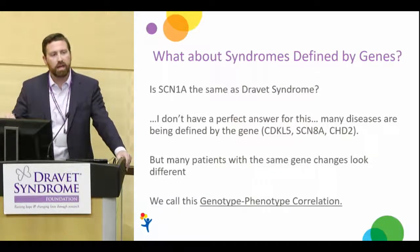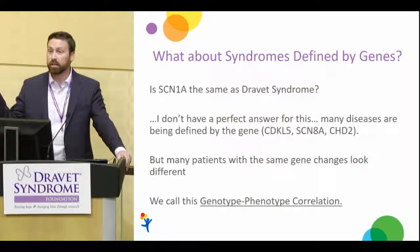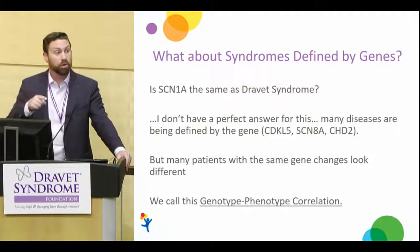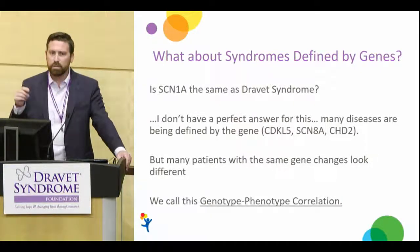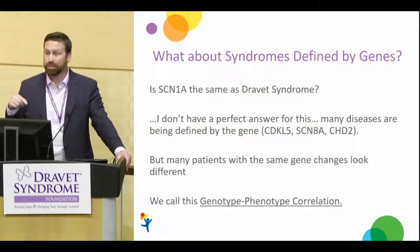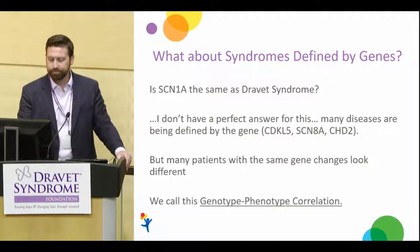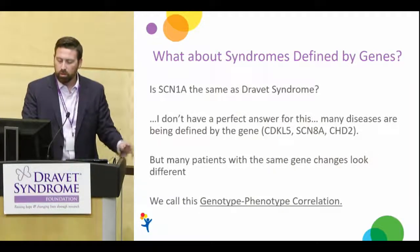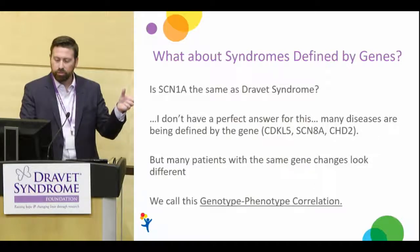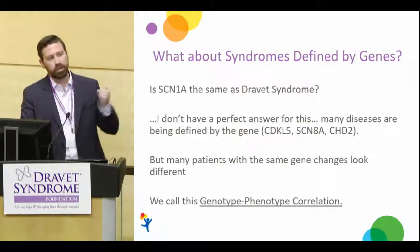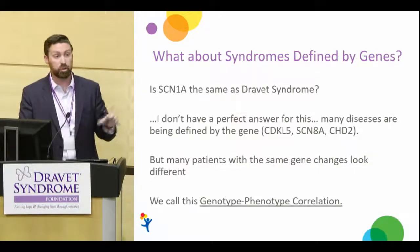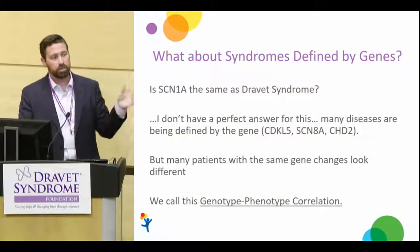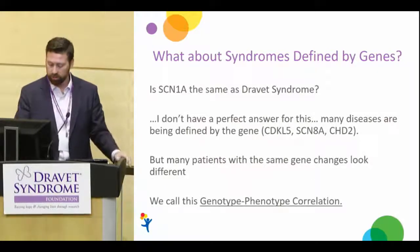Even if we say it's the gene, that may not give us more information than an epilepsy syndrome does, and it doesn't necessarily mean there aren't limitations to using that definition. This gets into what we call genotype-phenotype correlation — how does the gene change present in a patient or group of patients explain the way that patient looks?